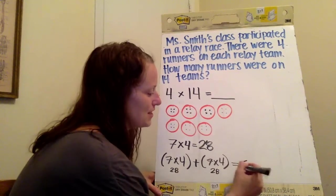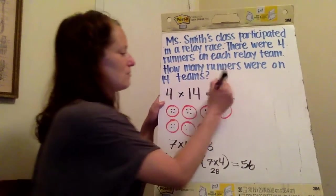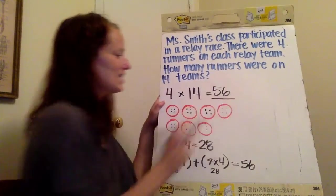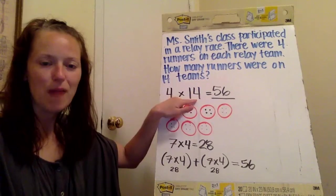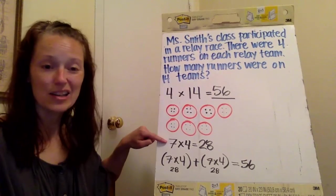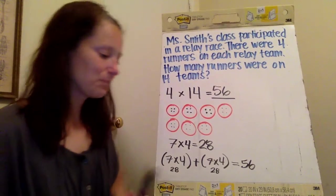I have 56. So I now know that four times 14 is 56. I broke this number up and I used an equation that I already knew to help me.